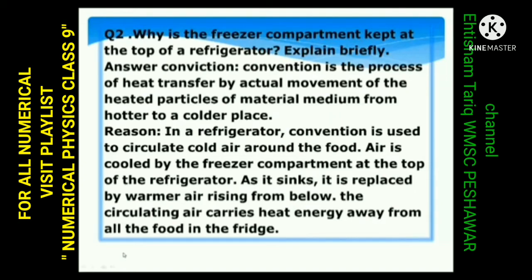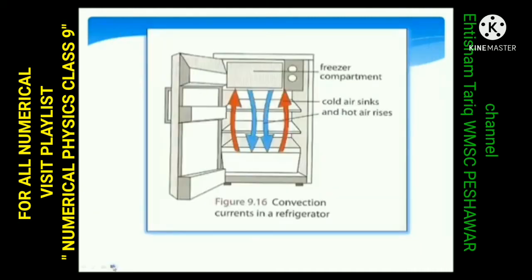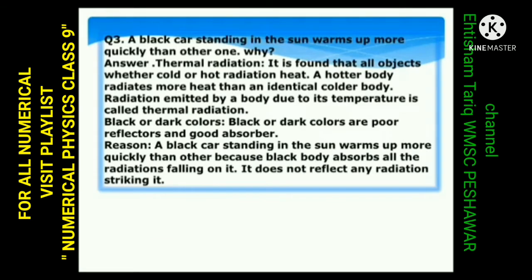Answer: Convection is the process of heat transfer by actual movement of the heated particles of material medium from hotter to a colder place. Reason: In a refrigerator, convection is used to circulate cold air around the food. Air is cooled by the freezer compartment at the top of the refrigerator. As it sinks, it is replaced by warmer air rising from below. The circulating air carries heat energy away from all the food in the fridge. آپ اس diagram میں دیکھ سکتے ہیں کہ blue color میں ٹھنڈی ہوا نیچے کی طرف آتی ہے اور red color میں hot air اوپر کی طرف جاتی ہے۔ یہ circulation مسلسل رہتی ہے اور تمام compartment ٹھنڈا رہتا ہے۔